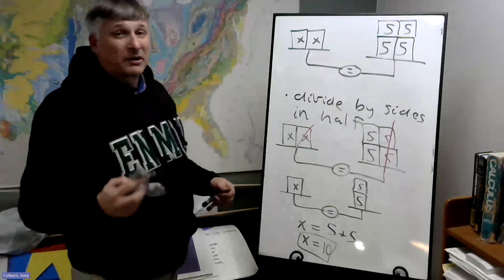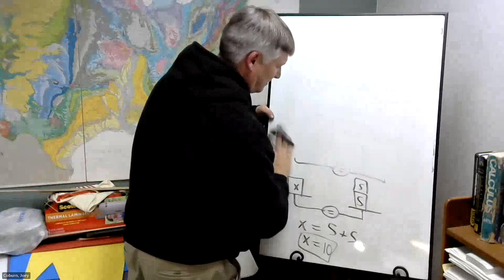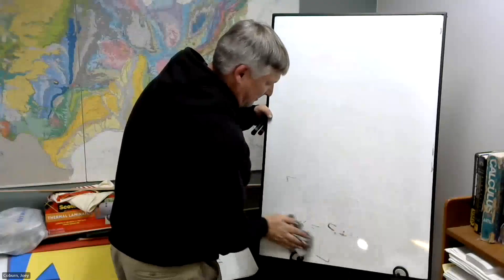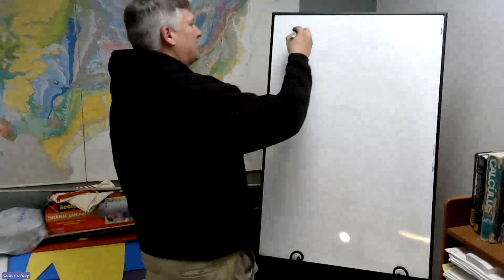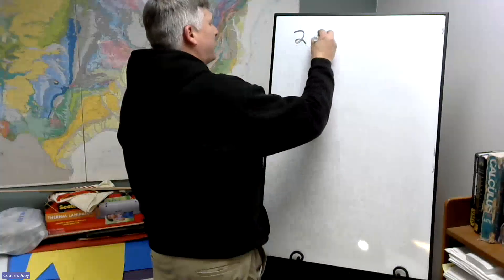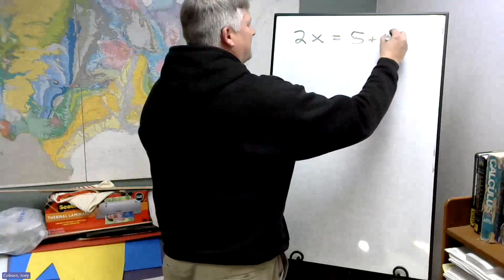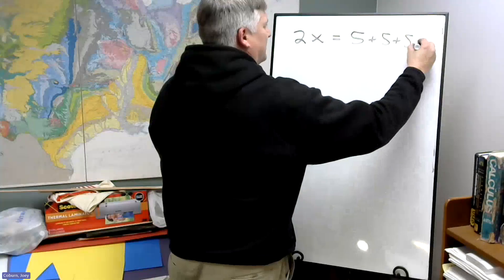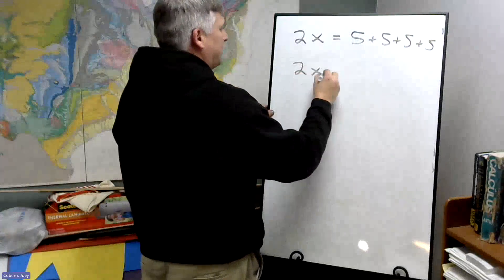So in terms of equations, what's going on here? We'll basically have two X's. So two times X, or 2X, is equal to five plus five plus five plus five. Or we could just call it 2X equals twenty pounds.